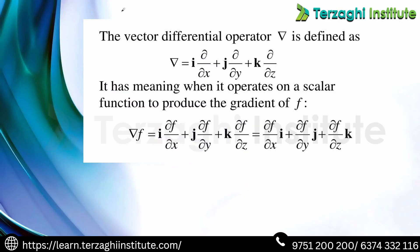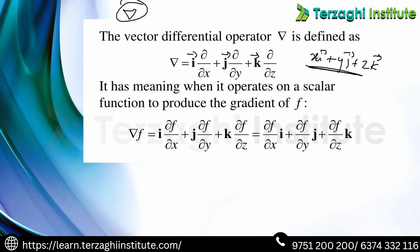First, vector. The del operator is the first vector operator. The del operator is defined as: (∂/∂x)i + (∂/∂y)j + (∂/∂z)k. Applied to a vector field xi + yj + zk, it is a general vector quantity — it has both magnitude and direction.